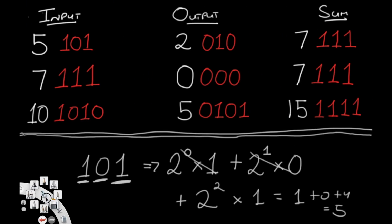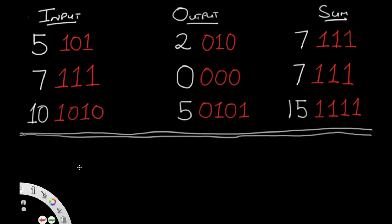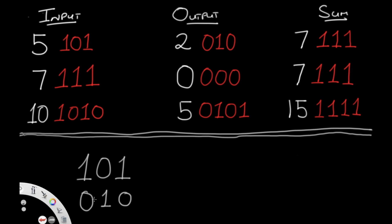Now, how do we actually apply this to our question? We go back to 101, which represents 5. Its complement is 010 — 1 becomes 0, 0 becomes 1, 1 becomes 0 again. Now here's a very interesting observation: when you add the input and its complement, we're always going to get a binary value which has only 1s in it. That makes sense — every position where there's a 0, the complement has a 1.